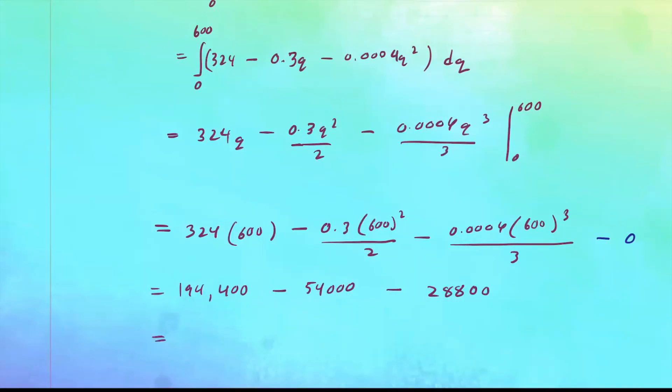And all of this will add up to 111,600. So 111 and then 6,000. So that will be the consumer surplus for this particular example.